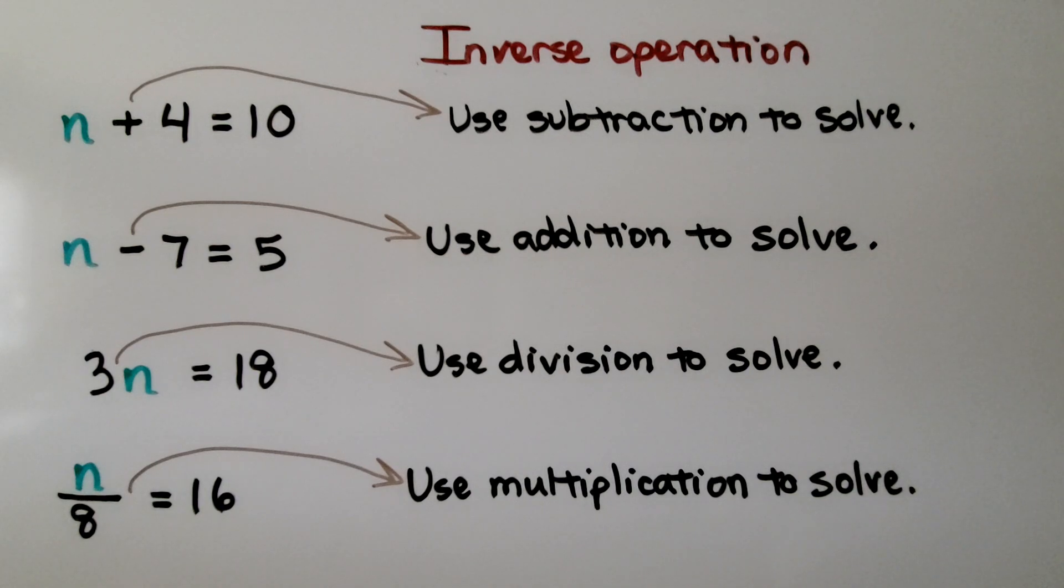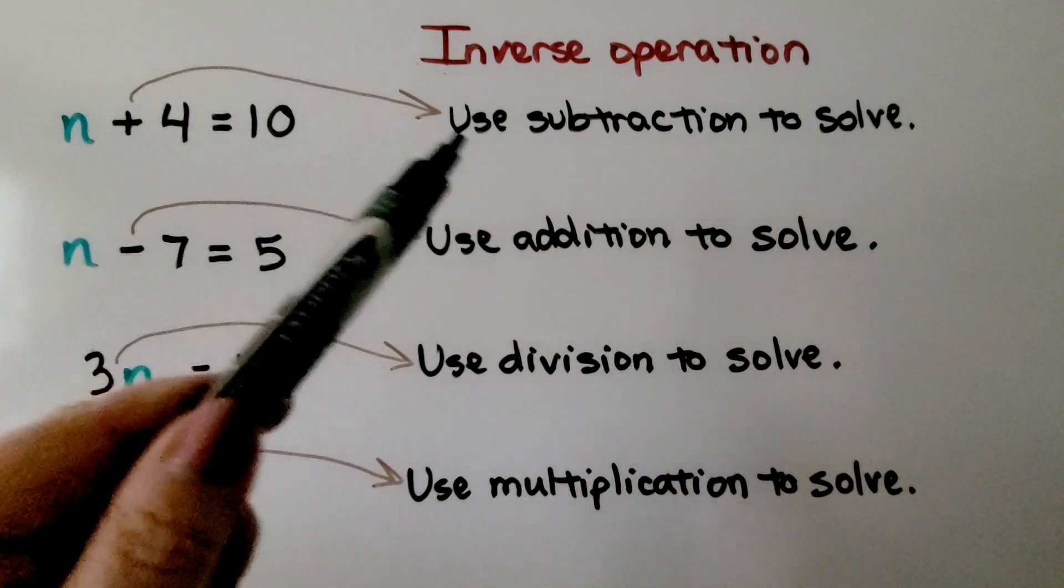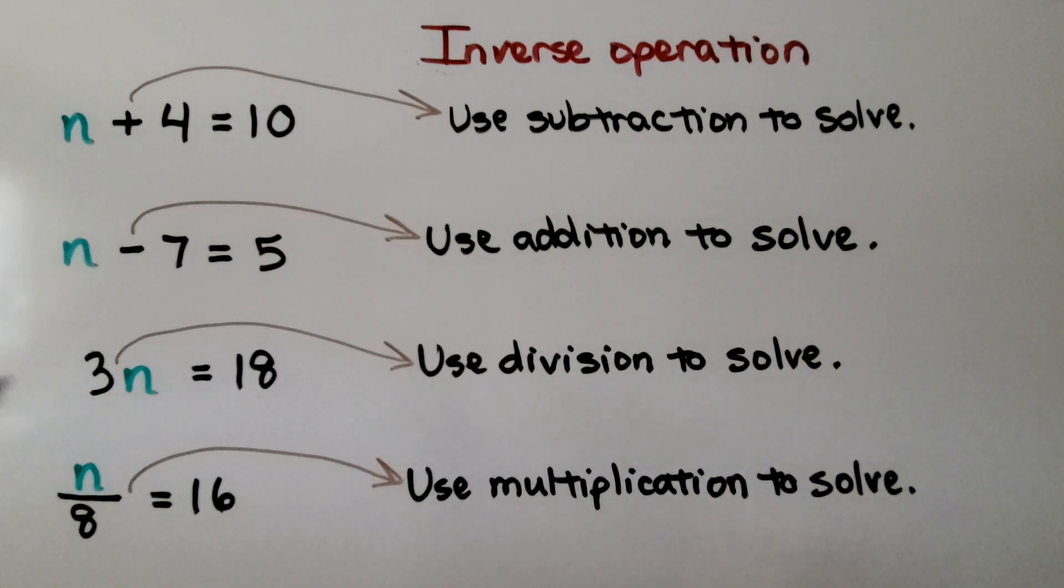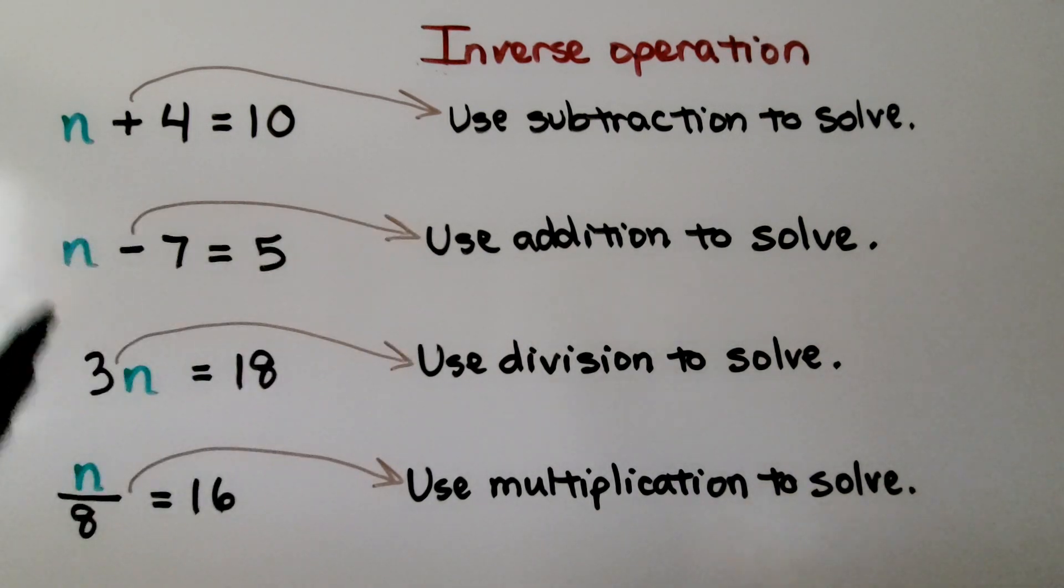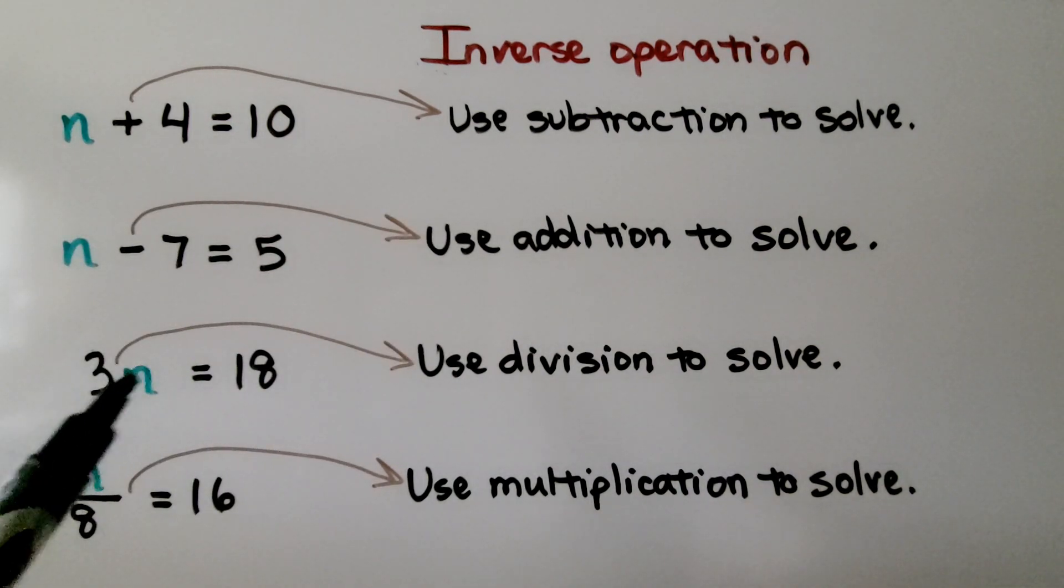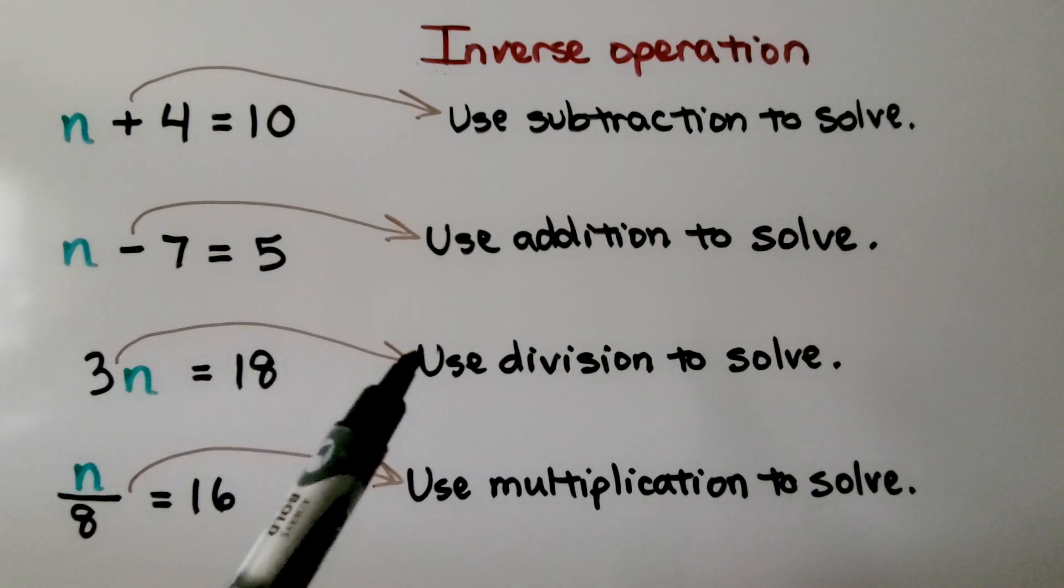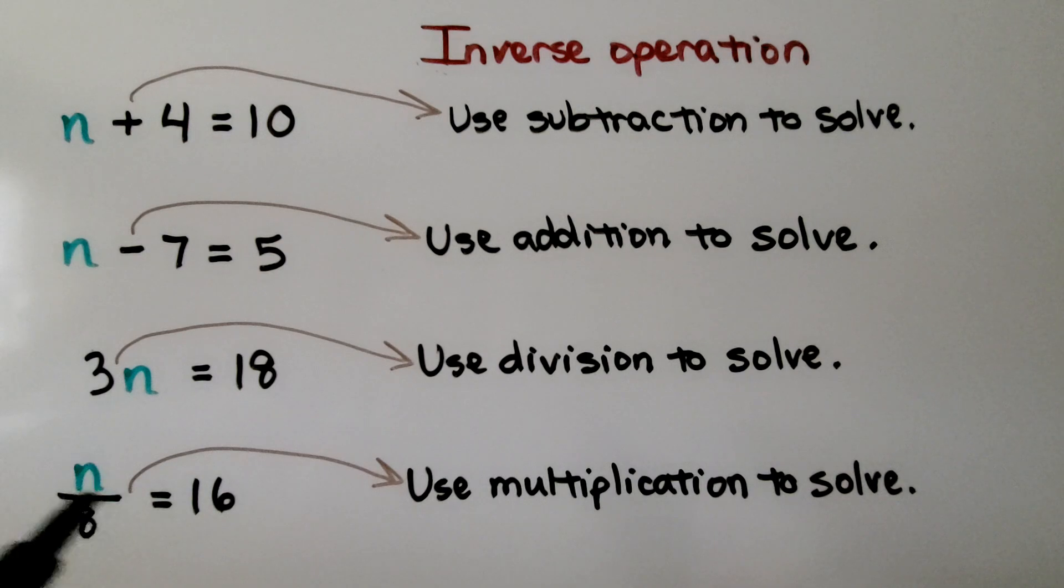So to solve an equation using an inverse operation, we look at the sign in the equation. If we see a plus sign for addition, we use subtraction to solve. If we see a subtraction sign, we use addition to solve. When we see a coefficient next to a variable, we know that's multiplication. We use division to solve. And when we see the fraction bar, we know that is division. We use multiplication to solve.